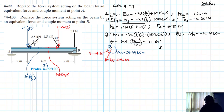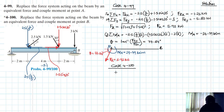Let's go to case number two, 4-100. For this one, FR will not change — it will be 5.93 kilonewtons. And so is the angle; it won't change — it will be the same. It's only the moment that will change.